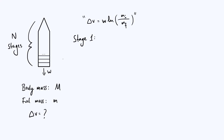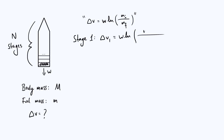Let's start with stage one — the part of the motion where the fuel in the very bottom segment of the rocket is burned. We get a delta V value associated with that stage, delta V1. It's w times the natural log of: the initial mass is just the total body mass and fuel mass at the very beginning, so little m plus big M. The final mass is little m plus big M minus however much fuel you've burnt, which is m over n.